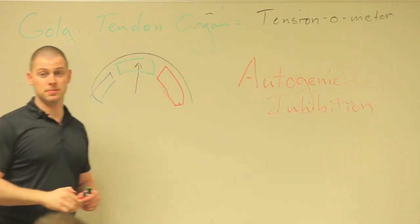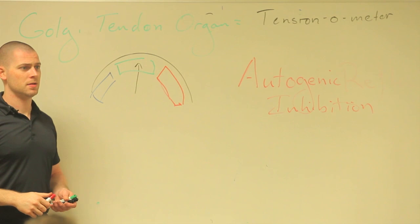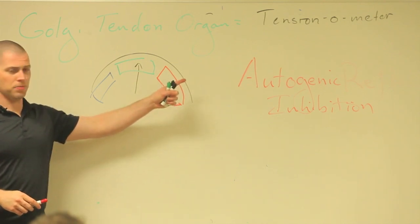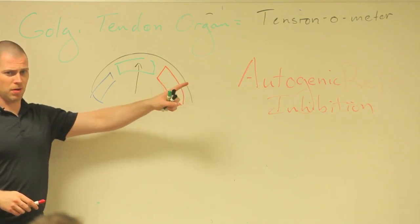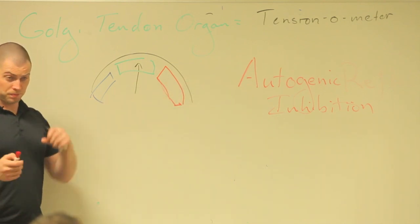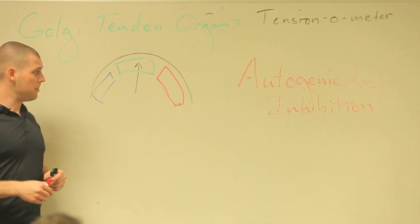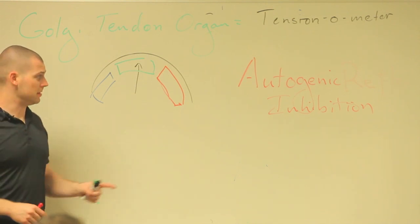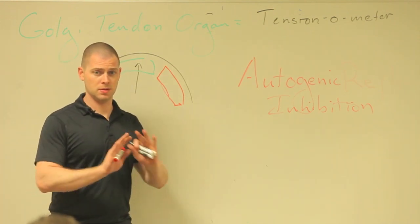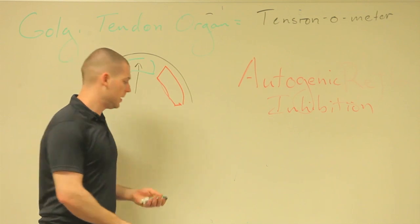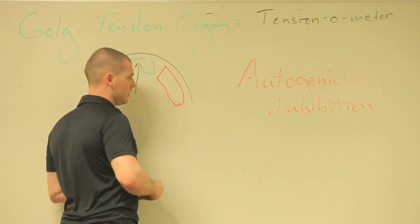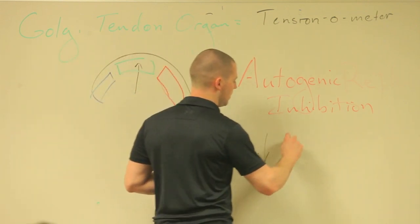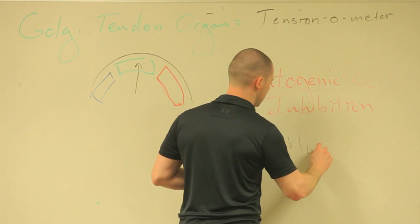Does anybody know what that reflex is called that Golgi tendon organs are responsible for? Autogenic inhibition. What does autogenic probably mean? Automatic — 'genic' referring to within the same muscle. Inhibit means to stop it. So this decreases muscle activity.